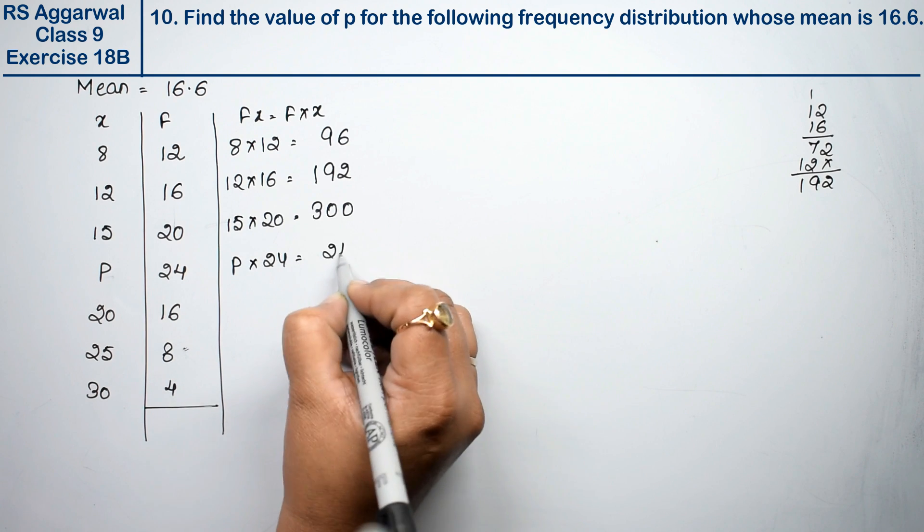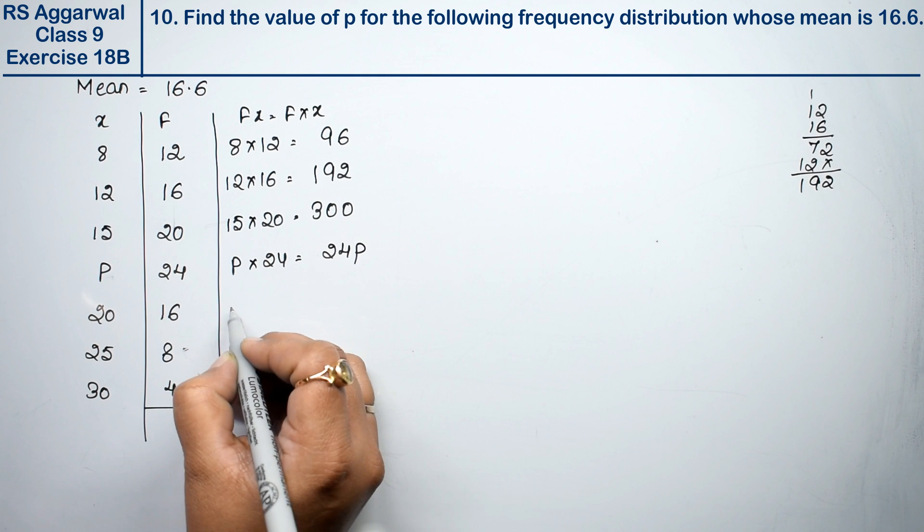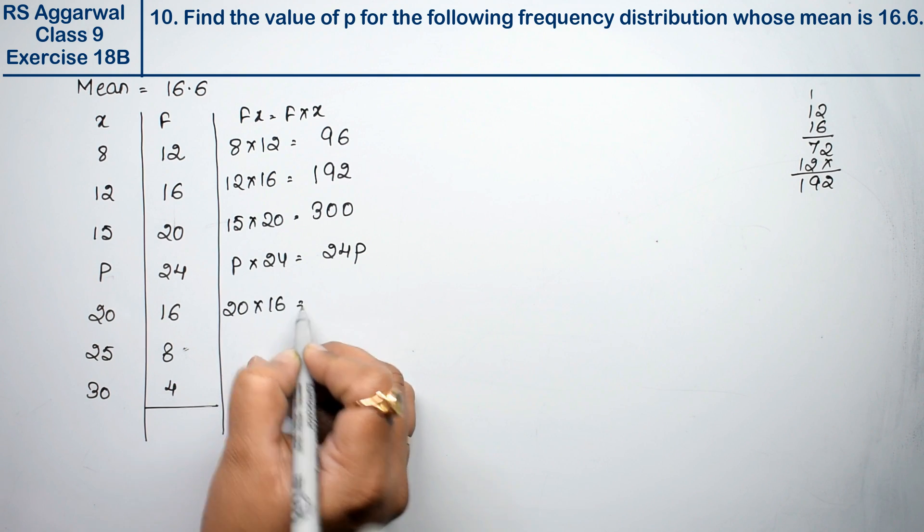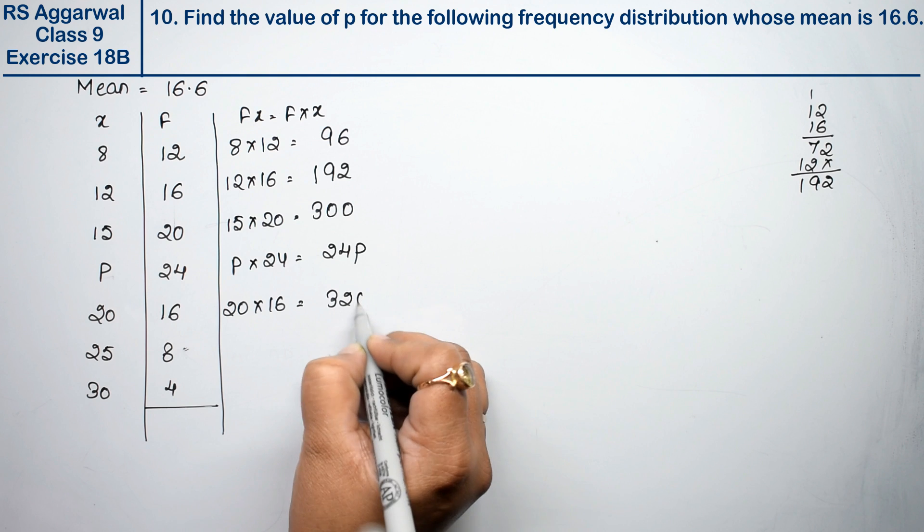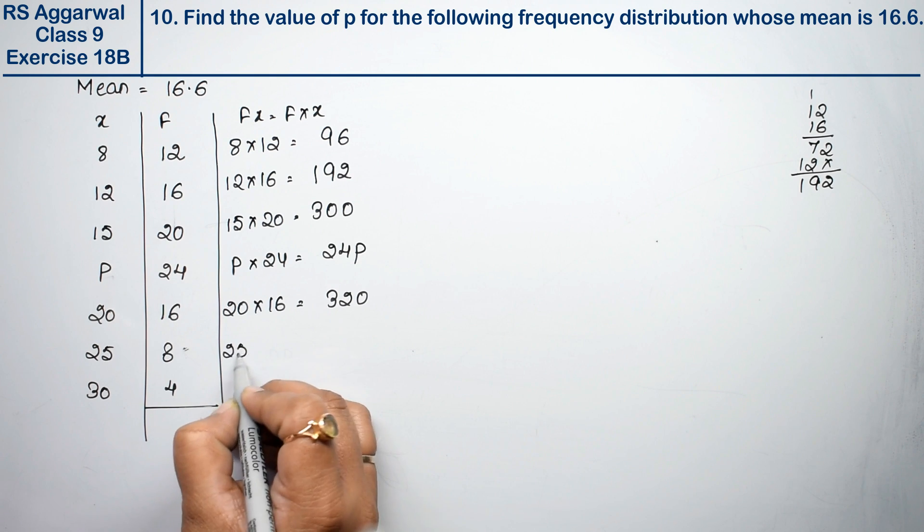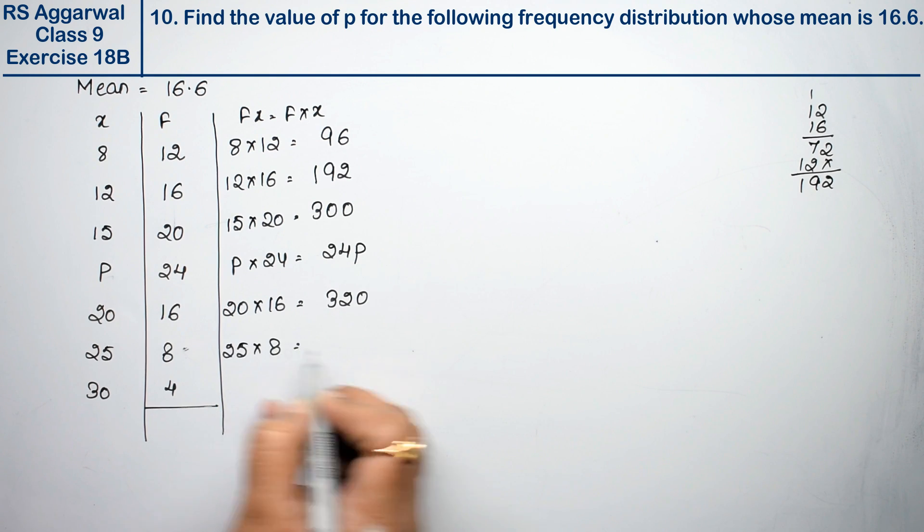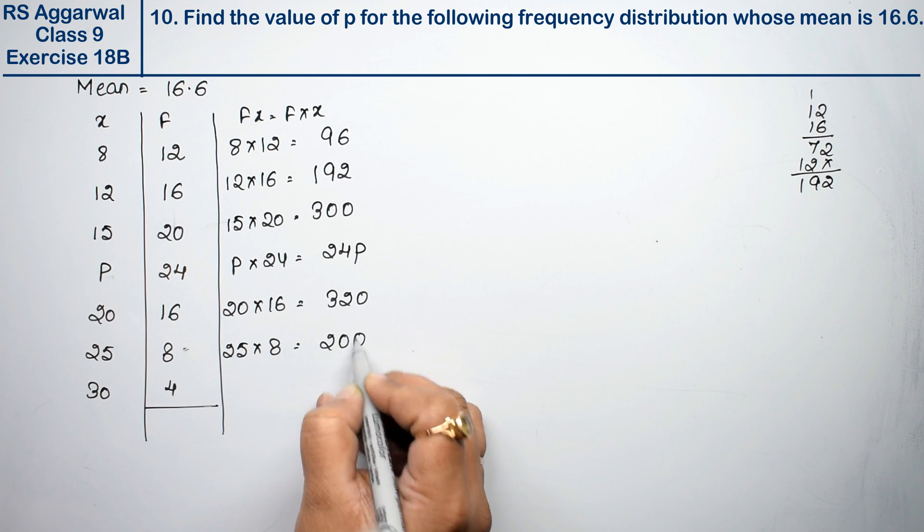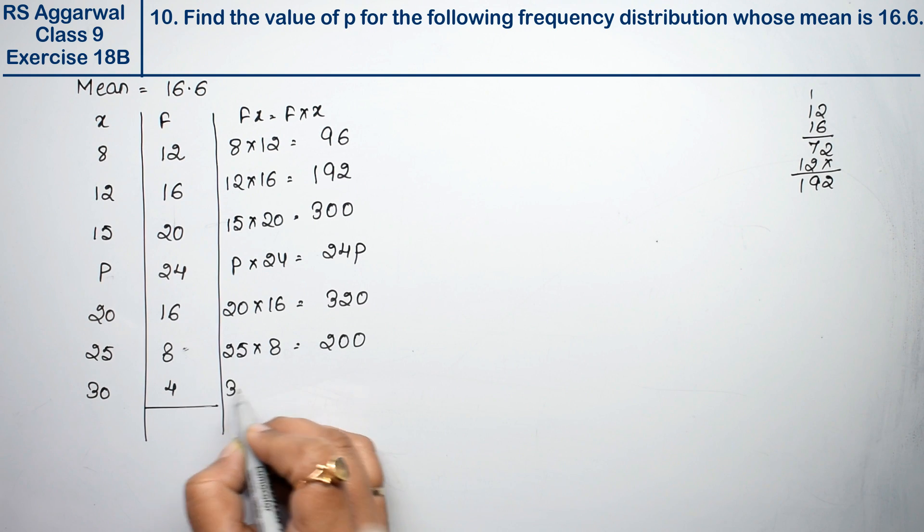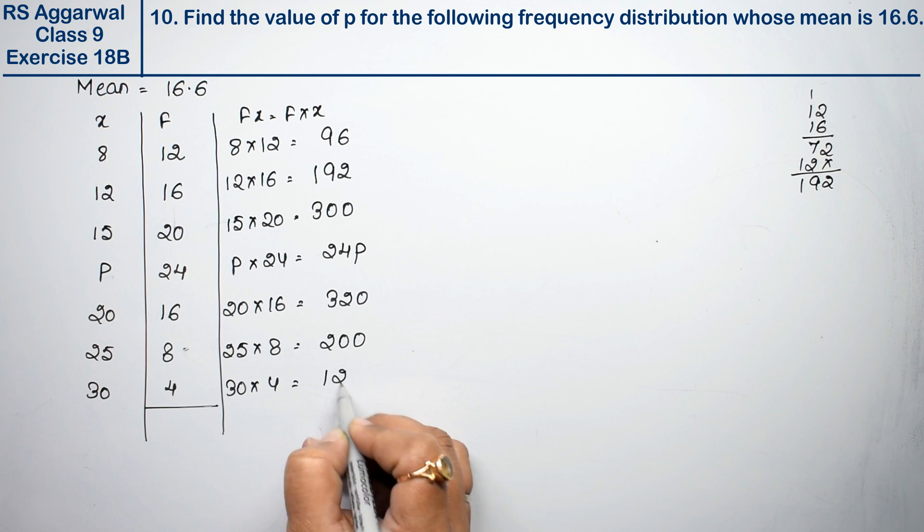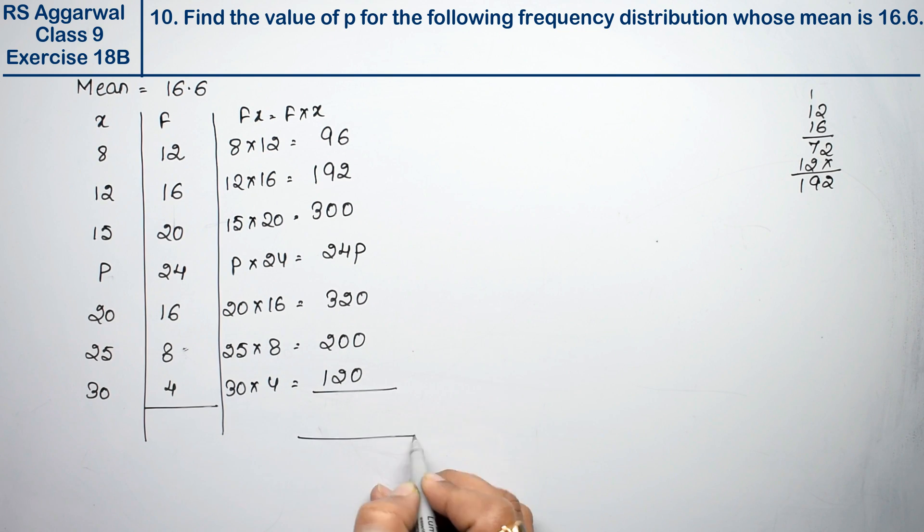Continuing with fx calculations: 20 times 16 equals 320, 25 times 8 equals 200, and 30 times 4 equals 120.